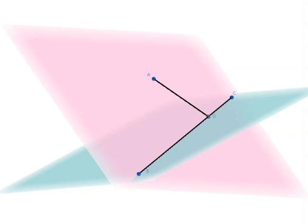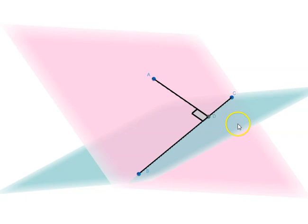Let us mark that angle as a right angle. It might happen that the randomly picked line BC on which we drew the perpendicular AD makes AD also perpendicular to the plane of reference. If it is perpendicular to the plane, we have done our job. But if it is not, then we have to proceed further.